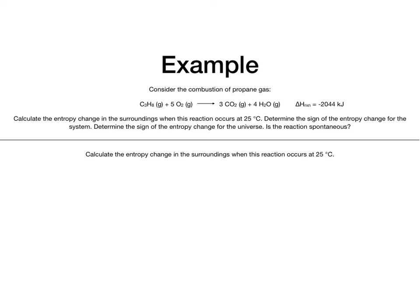In this example we're going to consider the combustion of propane gas: C3H8 plus oxygen forming CO2 and water. The problem tells us that the enthalpy of this reaction is exothermic, giving off 2044 kilojoules of energy. The questions are: calculate the entropy change in the surroundings at 25 degrees Celsius, determine the sign of the entropy change for the system, determine the sign of the entropy change for the universe, and is the reaction spontaneous?